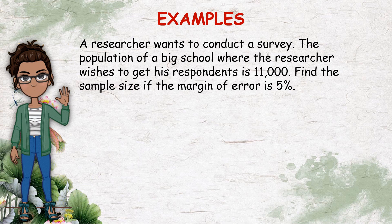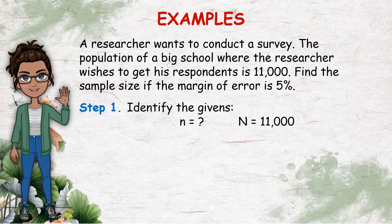Example number 2. A researcher wants to conduct a survey. The population of a big school where the researcher wishes to get his respondents is 11,000. Find the sample size if the margin of error is 5%. Step 1 is to identify the givens. So n, we will have to find the sample size and the number of population. The population is 11,000, indicated by capital letter N. And E, by the way, is 5% need to convert into 0.05 or in decimal form.